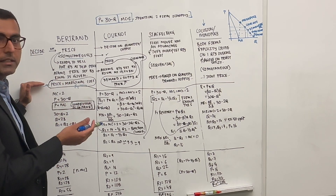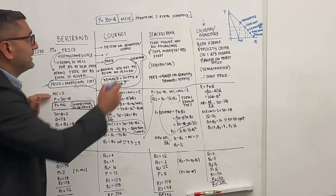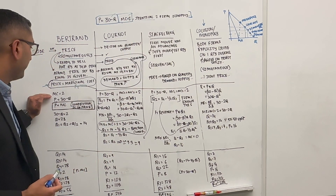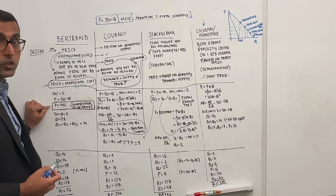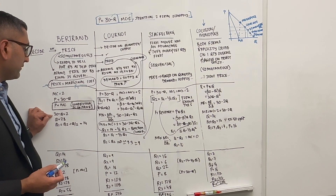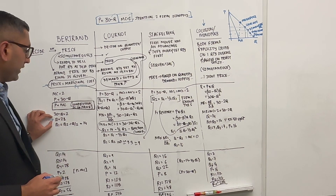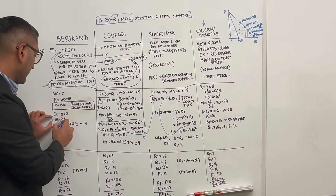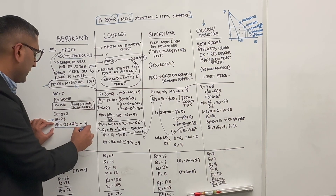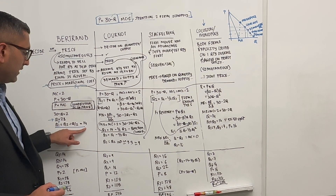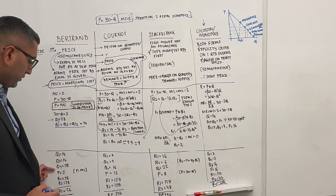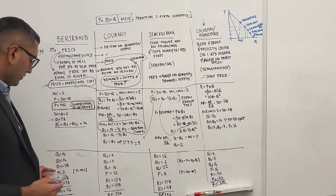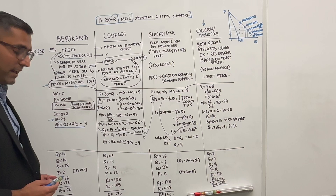In Bertrand, both firms simultaneously set prices equal to their marginal cost, thinking through what the other firm is doing. Both firms are identical with marginal cost of 2 and face the same demand function P = 30 minus Q. Setting price equal to marginal cost: 30 minus Q equals 2, so total quantity Q_T = 28. Splitting equally, each firm produces 14 units. So Q1 = 14, Q2 = 14, total = 28. Price is 30 minus 28 = 2, which equals marginal cost.